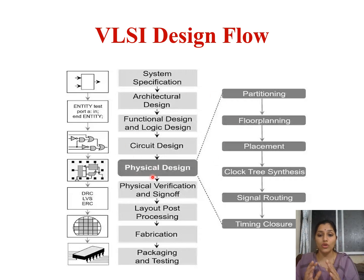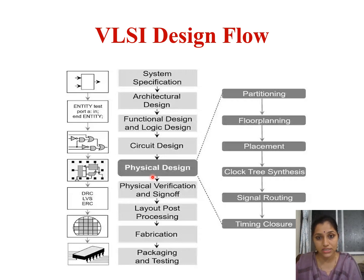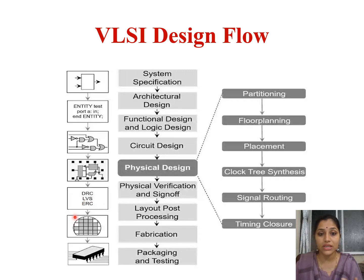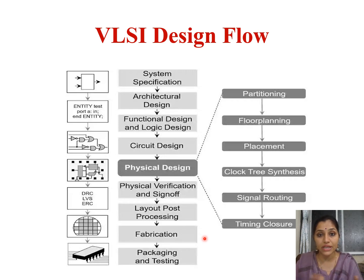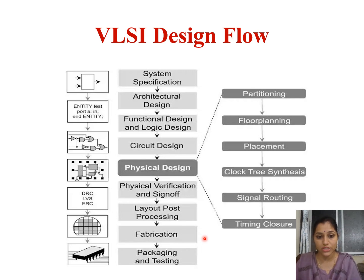Physical design is floor planning — planning where to put which thing on the chip. After physical design is done, the next step is physical verification: design rule check (DRC), layout versus schematic (LVS), and electrical rule check (ERC). We need to check whether the spacing is maintained between two metallic wires and between contacts — that comes under DRC. Then we check whether our layout and schematic are both the same.